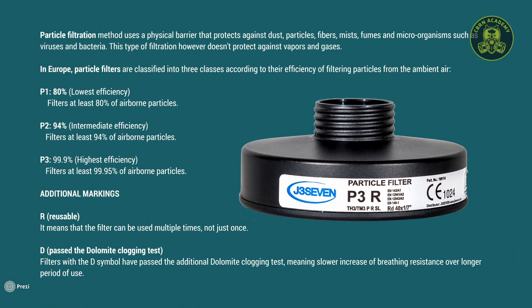Particle filtration uses a physical barrier that protects against dust, particles, fibers, mists, fumes, and microorganisms such as viruses and bacteria. This type of filtration, however, doesn't protect against vapors and gases.